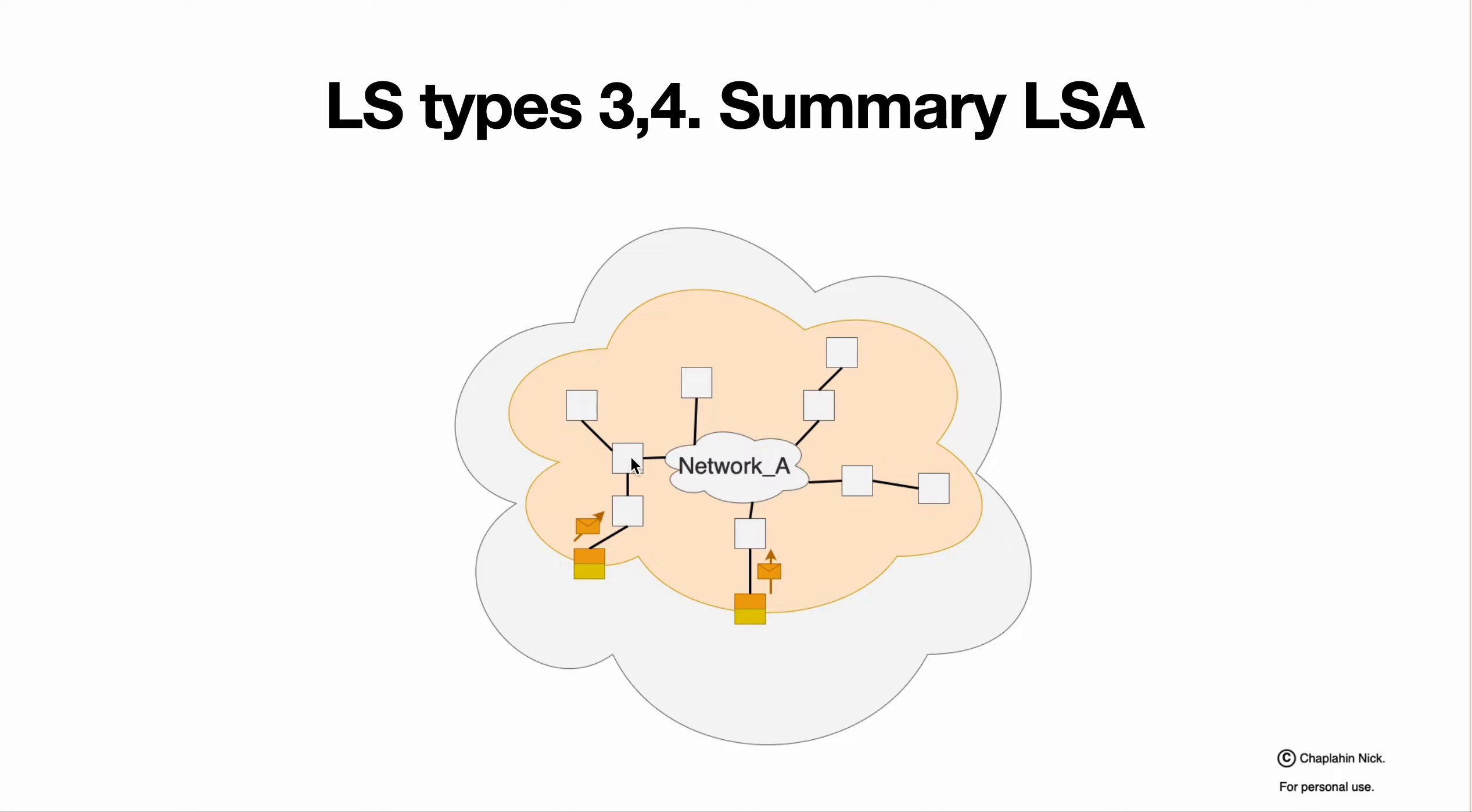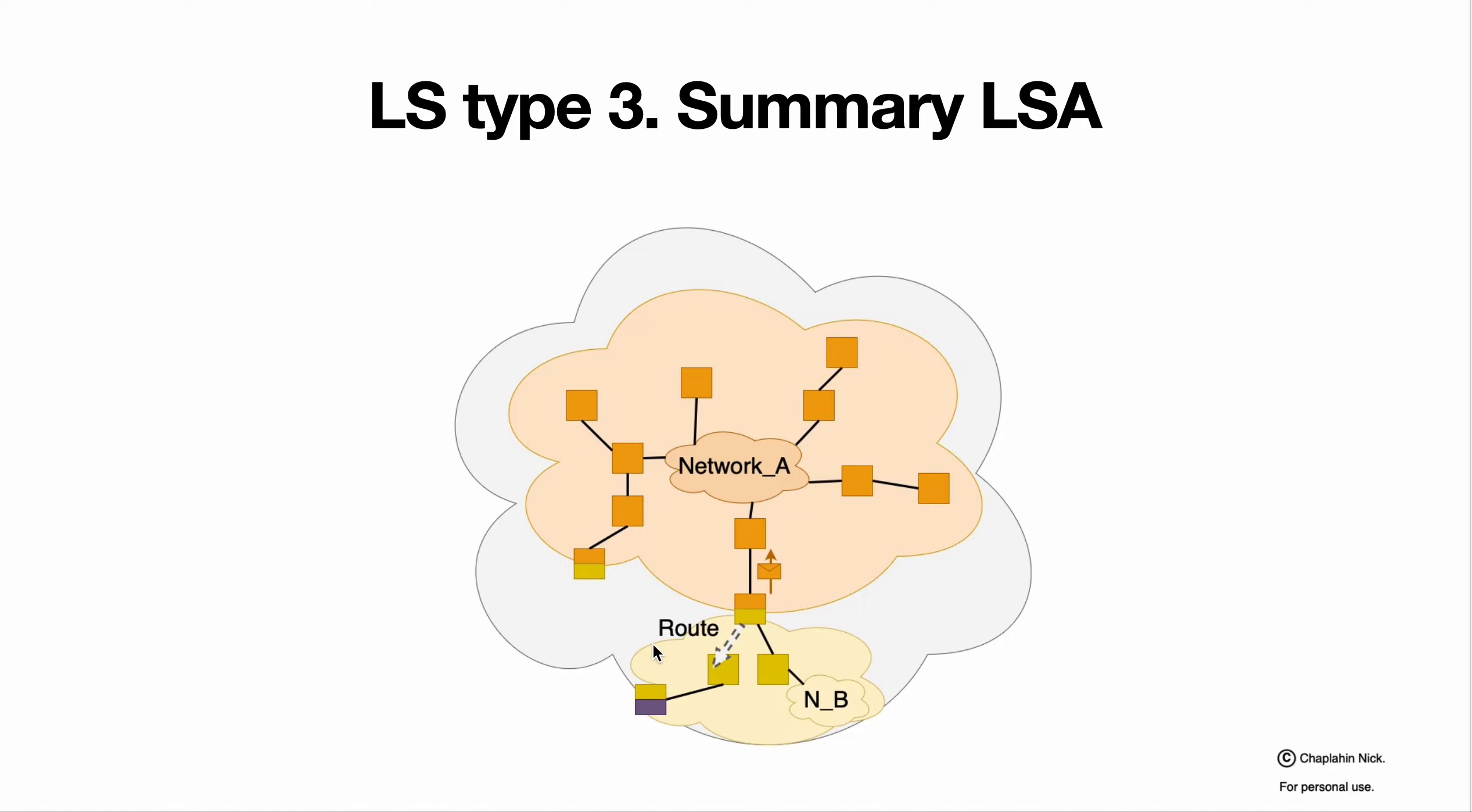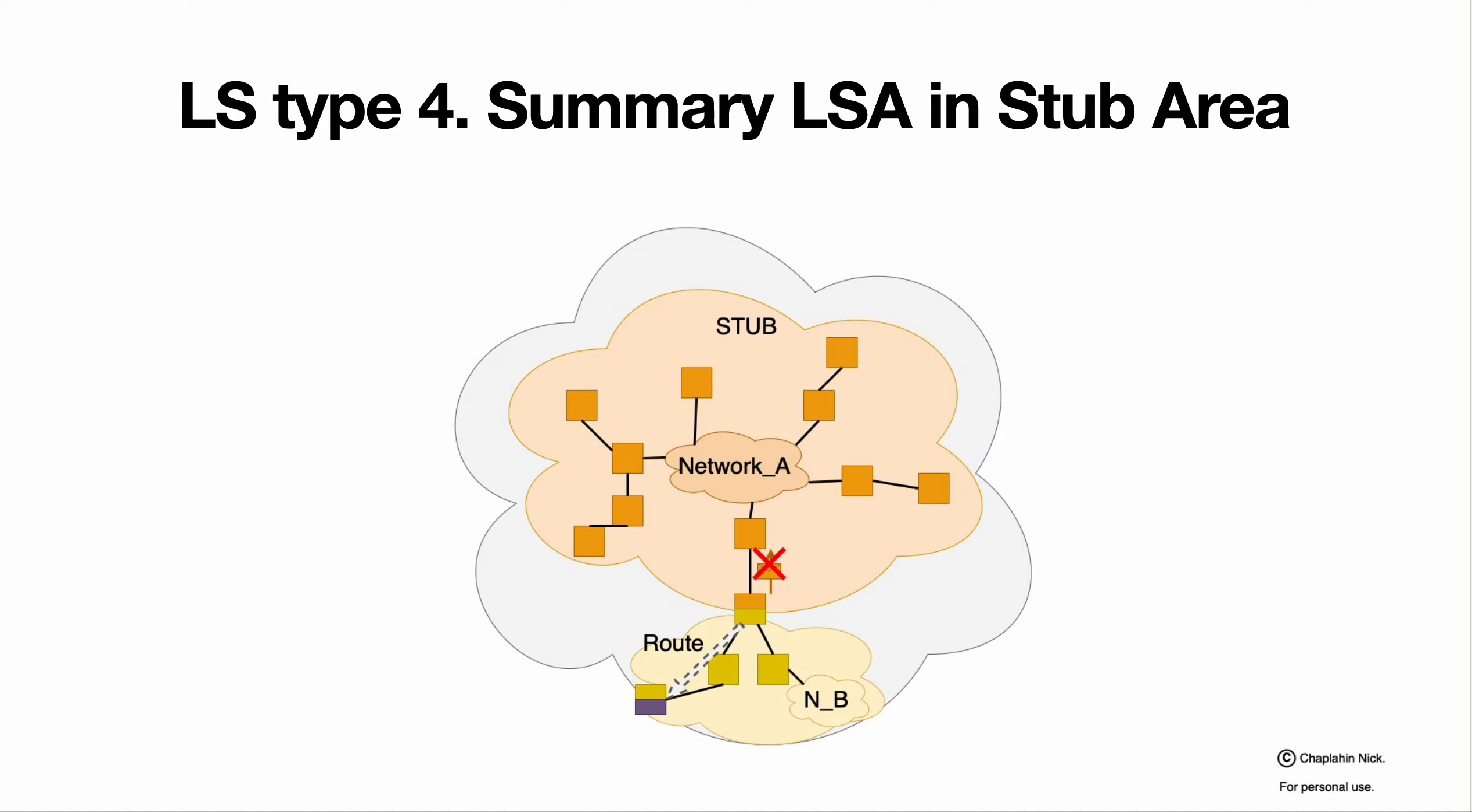Border router generates summary LSAs to notify all devices within area about possible routes. If they're notifying about routes to another routers or networks within some area, those are LSAs type 3. If they're notifying about routes to autonomous system border router, this is LSAs type 4. The difference is LSAs type 3 running successfully in every area. LSAs type 4 running in every area except STUB.